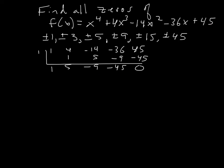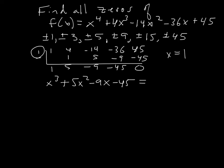We write down x³+5x²−9x−45 and set it equal to zero. Now, there are a couple of ways to handle this. If you notice, this cubic factors by grouping: take the first two terms and factor out x², then take the last two and factor out −9, and you'll have (x+5) inside both parentheses. If you see that, you don't need to keep doing synthetic division.